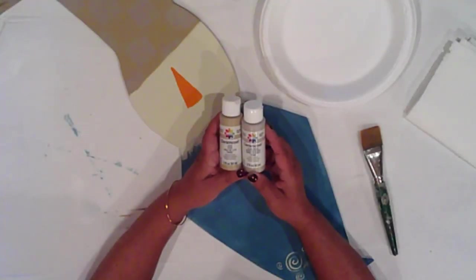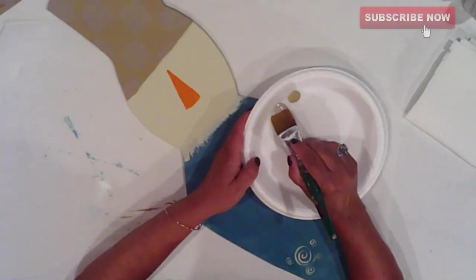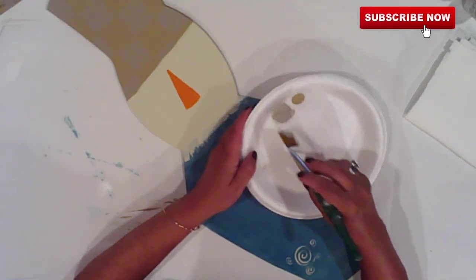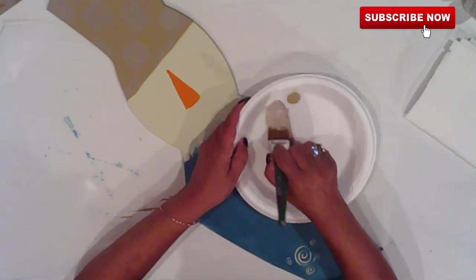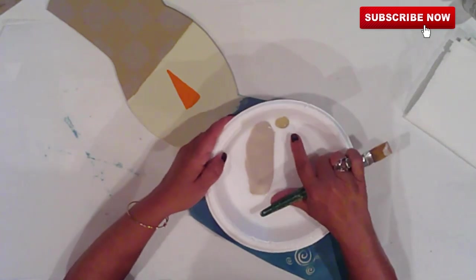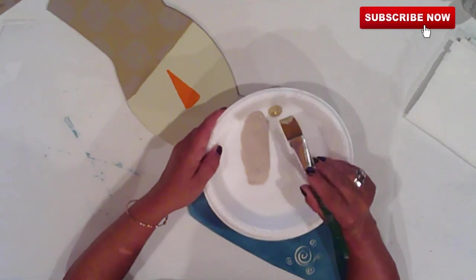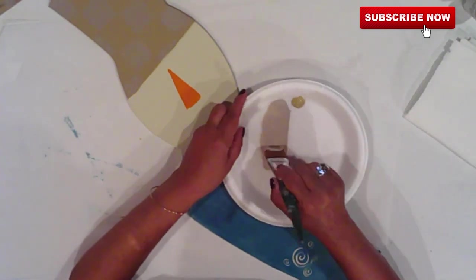For his cheeks, I'm using both Jute and Sand Dune. I'll load my brush with Sand Dune and then I'll side load both corners with Jute. This adds my shading and my cheek color in one go.